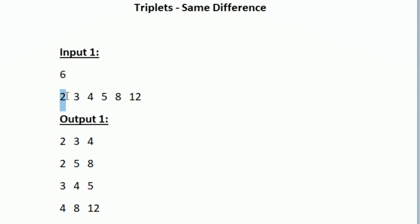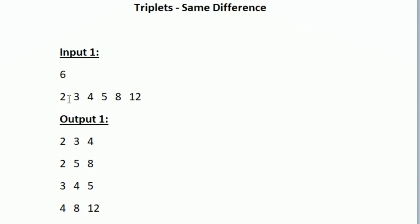So we print it in our output. We can also form 2 5 8, which is also a valid triplet because the difference between 5 and 2 is 3, and the difference between 8 and 5 is also 3. The difference between the first two and last two is the same, so we print it. Like this, we can generate several possible triplets and we have to print all the valid ones.